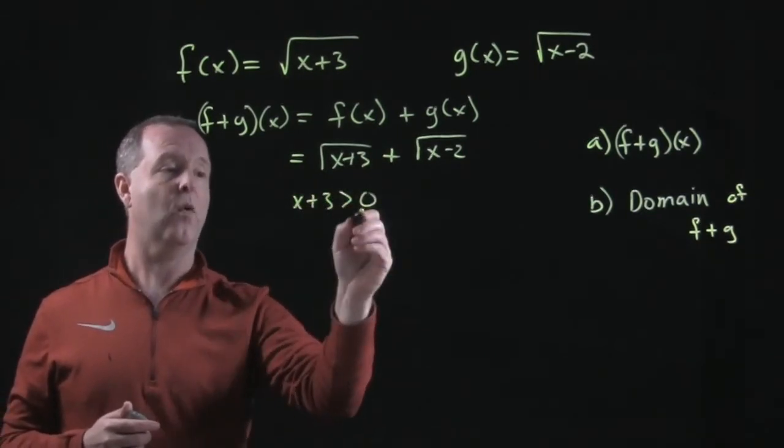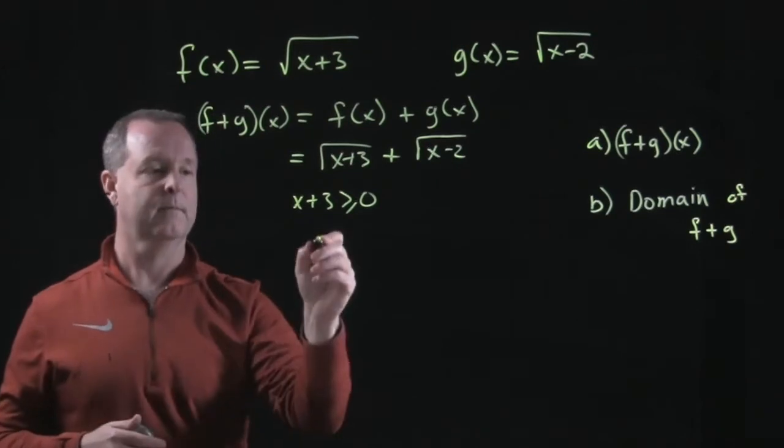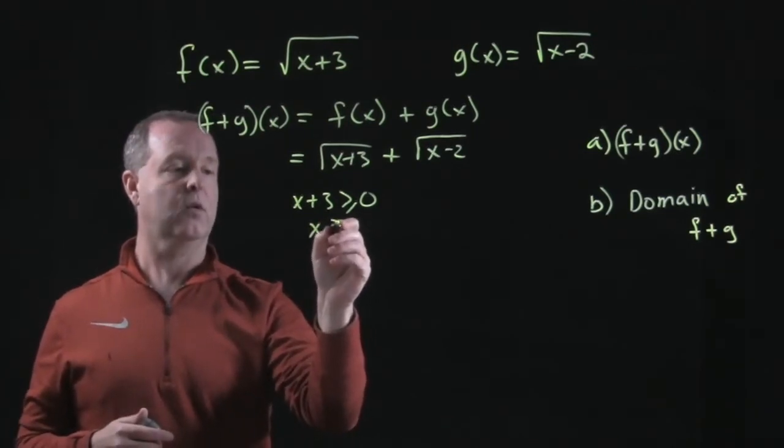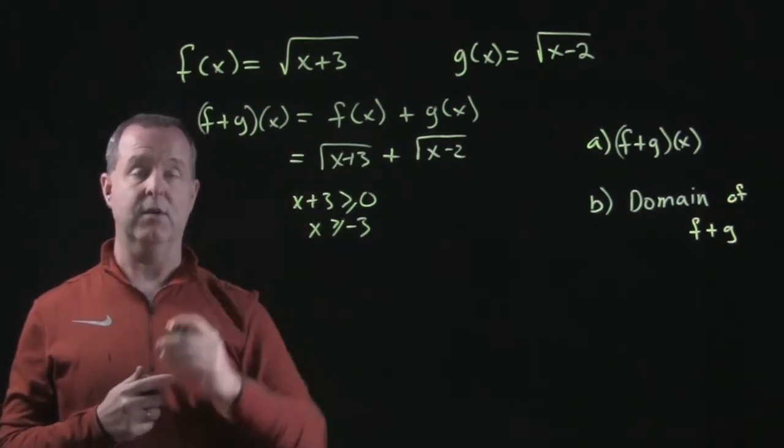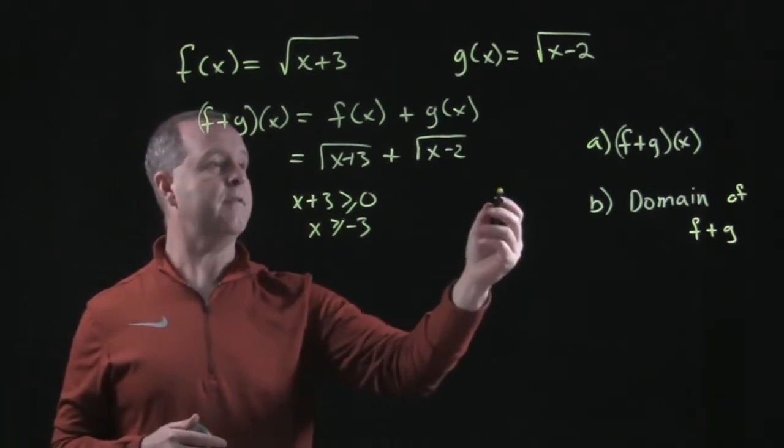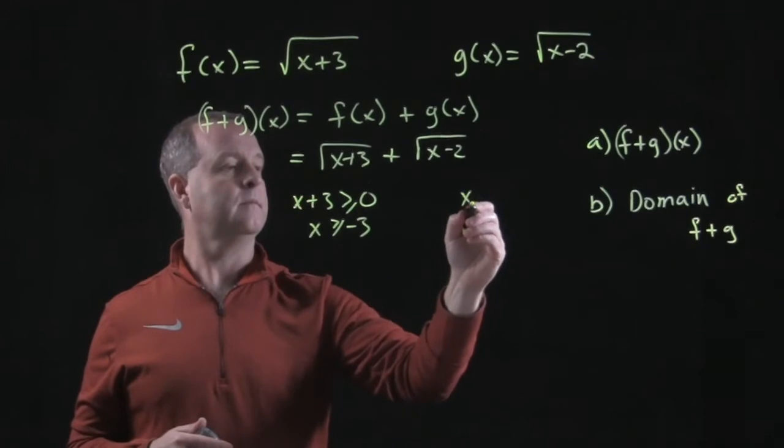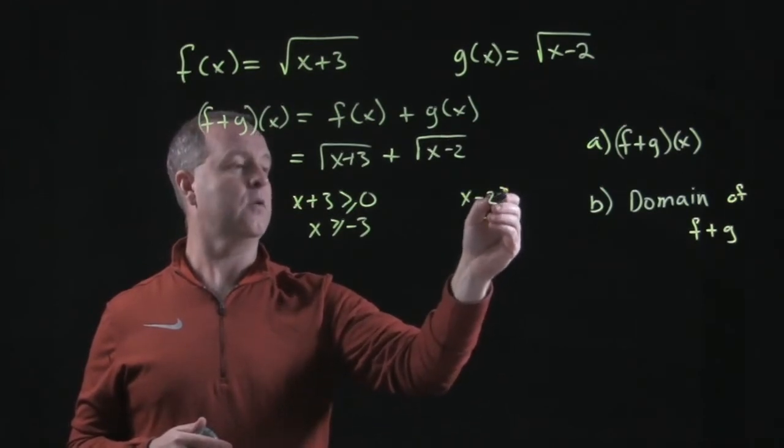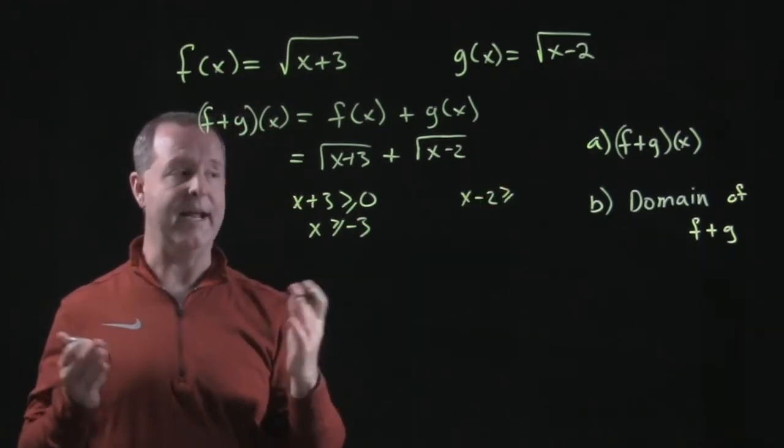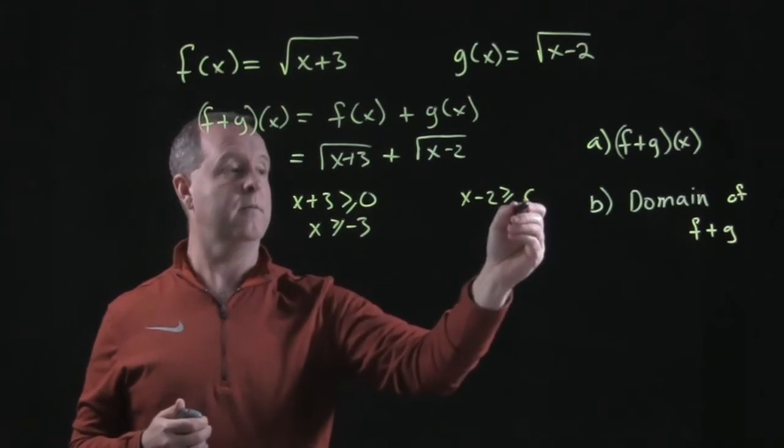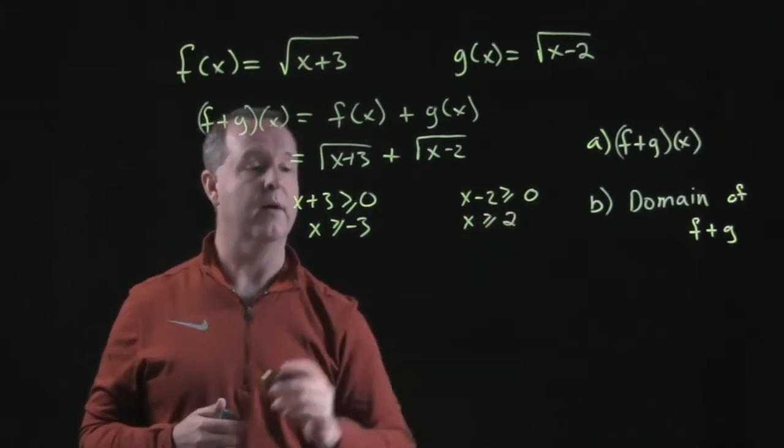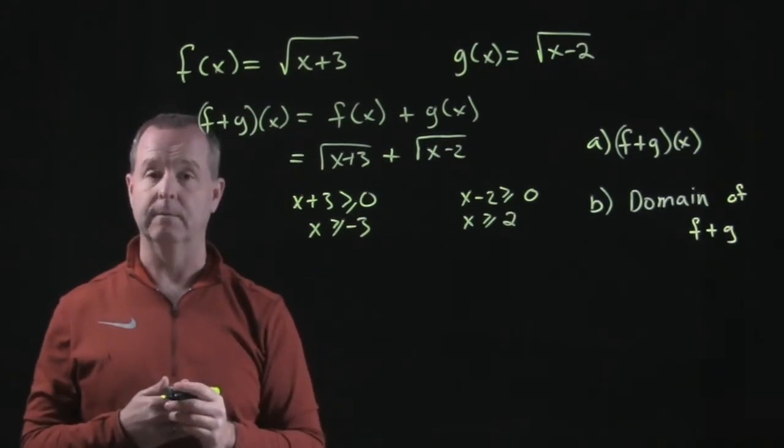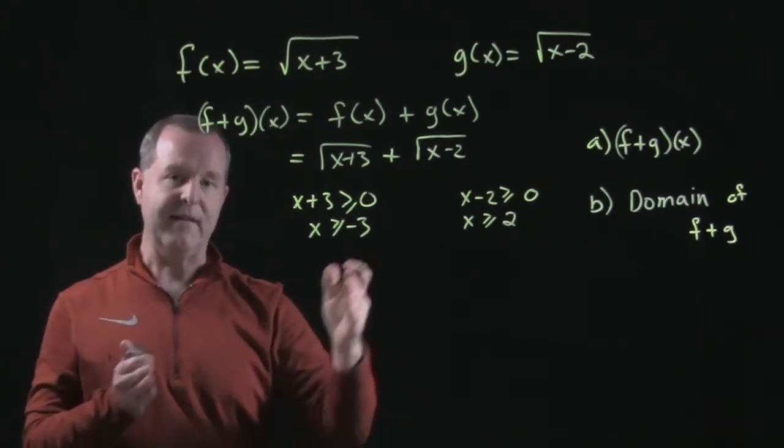has to be greater than or equal to zero. So all x's greater than or equal to negative three—that's the domain for f of x. For g of x, x minus two has to be greater than or equal to zero, and so this becomes all x's greater than or equal to two.